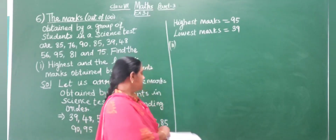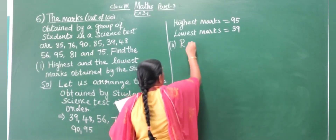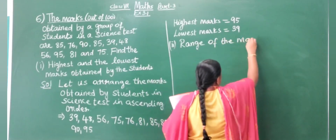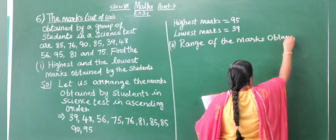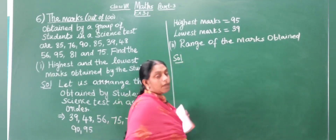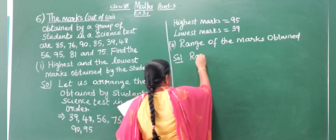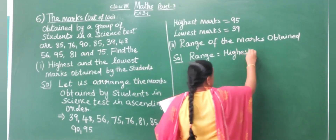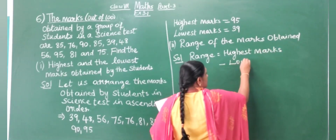The next question is the range of the marks. Range is the difference between the highest and the lowest. So, range equals highest marks minus lowest marks.